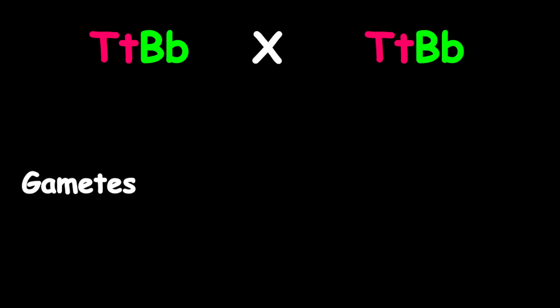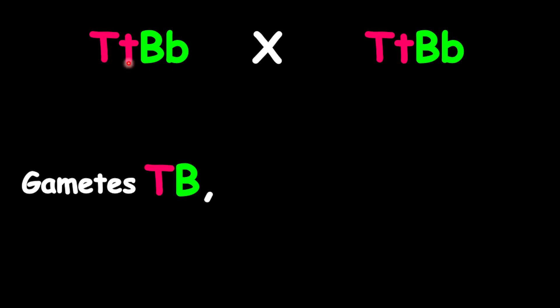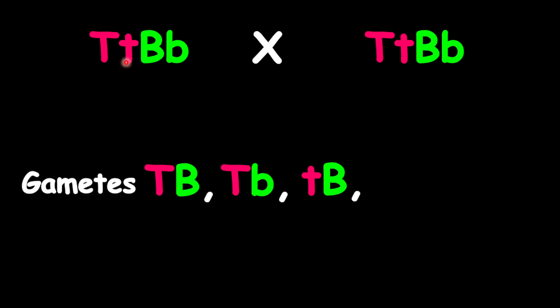Before we do that, you need to remember the law of independent assortment, which explains that the T's cannot go together or the B's cannot go together. So to determine the gametes, we're going to have uppercase T with uppercase B, uppercase T with lowercase B, lowercase T with uppercase B, and lowercase T with lowercase B.